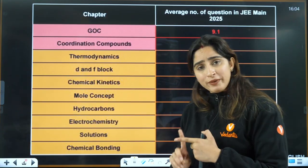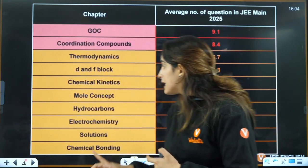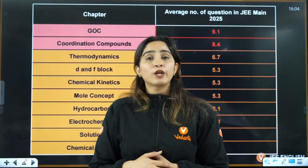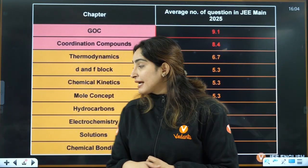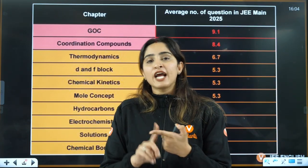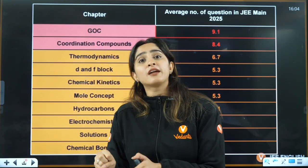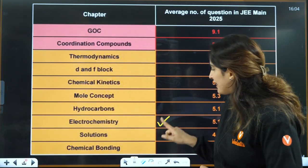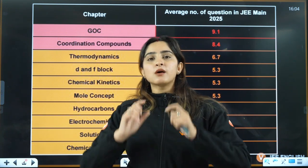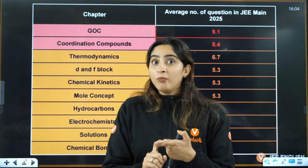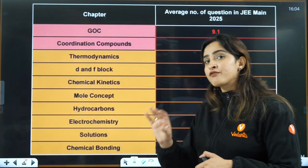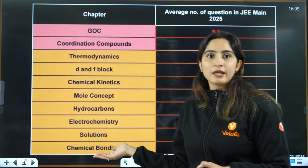From mole concept: stoichiometry-based questions, limiting reagent, and empirical formula questions. From hydrocarbons: all important naming reactions and important reagents, plus distinguish tests. From electrochemistry: the Nernst equation is a must, then electrolytic conductance, products of electrolysis, and Faraday's law — very very important; don't skip anything from electrochemistry. From solutions, colligative properties is the most important topic, but also do Raoult's law and Henry's law.